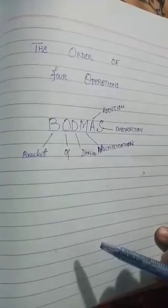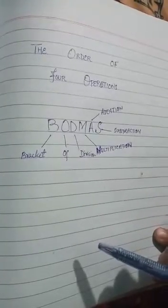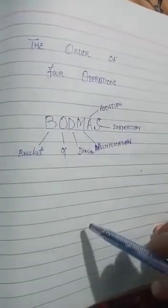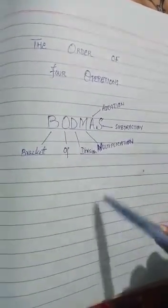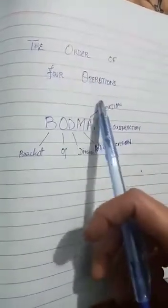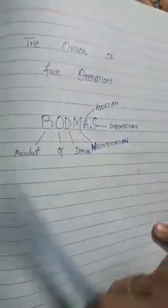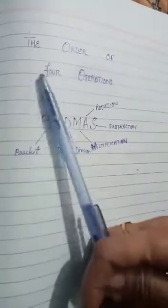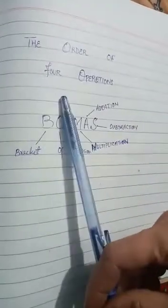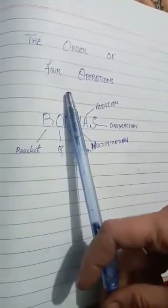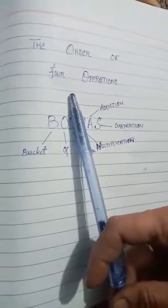Today we are going to start a new chapter in arithmetic. The name of the chapter is 'The Order of Four Operations.' We will study the order of four operations, and you have to make the title page of this chapter first.